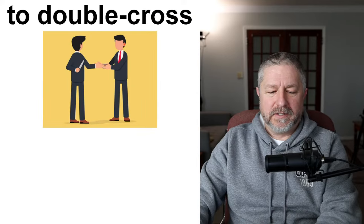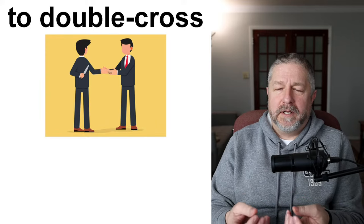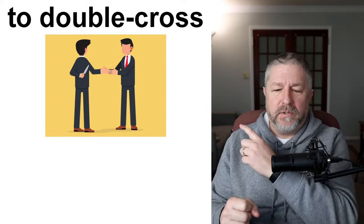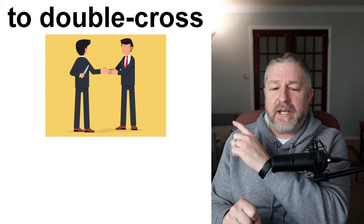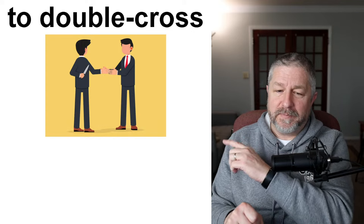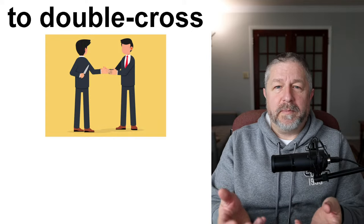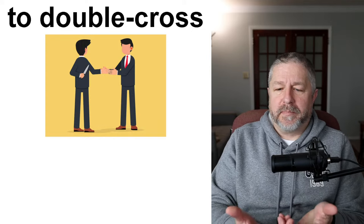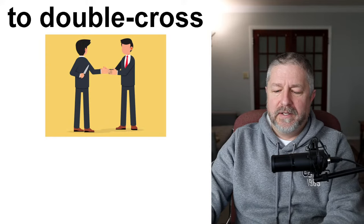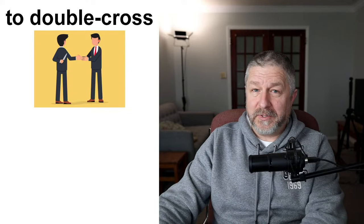To double cross someone means they think you're working for them but you're actually working for someone else. In this picture, someone is shaking another person's hand as if they're friends, but he has something ominous behind his back. Often in action movies, someone will double cross the people who trust them — maybe someone planning a bank robbery goes and tells the police what the group is going to do. In English, when you double cross someone, it means they trust you but they probably shouldn't.